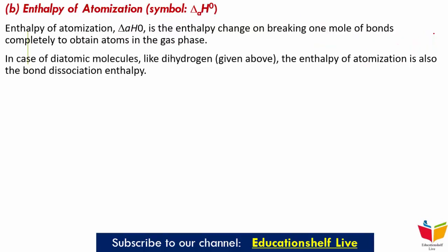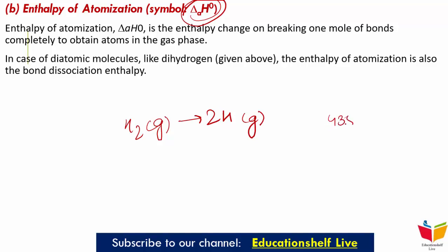Next is enthalpy of atomization. We understand this with an example: atomization of dihydrogen — H2(g) → 2H(g) — and its enthalpy of atomization is 435 kJ per mol. Here the H atoms are formed from breaking of the H–H bond present in dihydrogen. The enthalpy change in this process is called enthalpy of atomization — it is the enthalpy change on breaking 1 mole of bonds completely to obtain atoms in the gas phase.